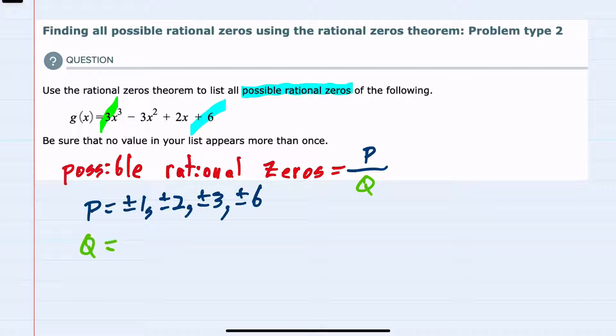For q we're working with the leading coefficient 3, so the factors of three are just one and three: plus or minus 1 and plus or minus 3.